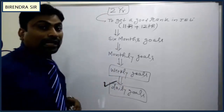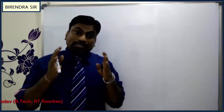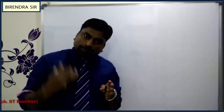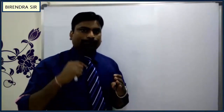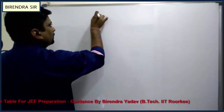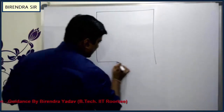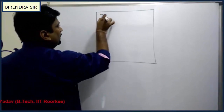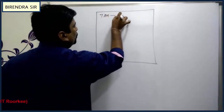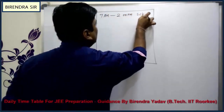You have to prepare these daily goals every day. On Sunday night, prepare your daily schedule for Monday. For example, on Sunday night you write the schedule for Monday: 7 am to 2 pm you have school — write that.